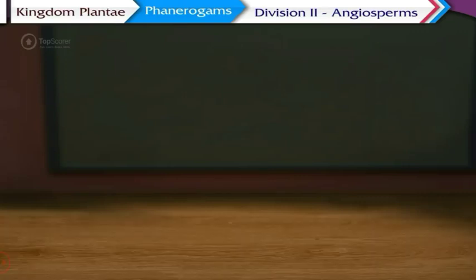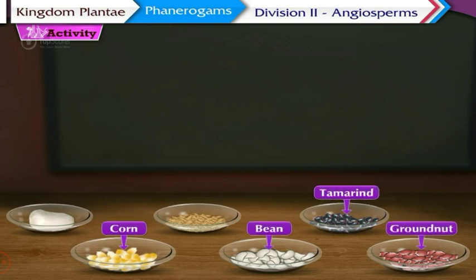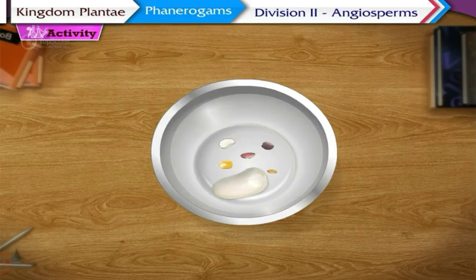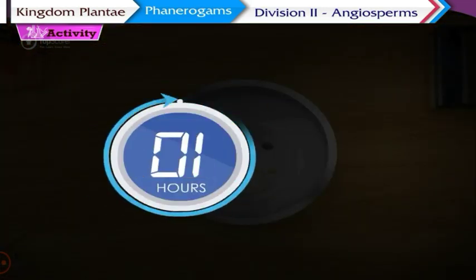Come, let us perform a small activity to learn more about angiosperms. Take some seeds of corn, bean, groundnut, tamarind, mango and wheat in a bowl. Add sufficient amount of water in the bowl to soak the seeds and keep the bowl undisturbed for about 8 to 10 hours.